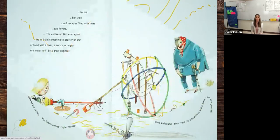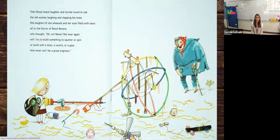Rosie heard laughter and turned around to see the old woman laughing and slapping her knee. She laughed till she wheezed and her eyes filled with tears, all to the horror of Rosie Revere, who thought, oh no, never, not ever again will I build something to sputter or spin or build with a lever, a switcher, a gear and never will I be a great engineer.